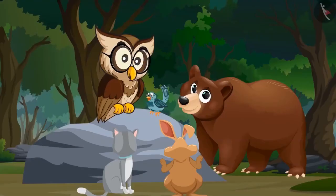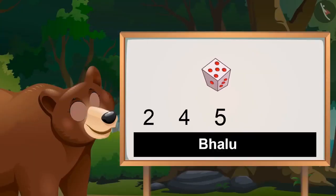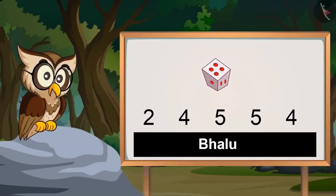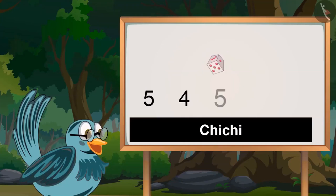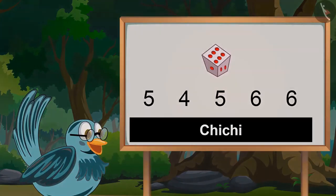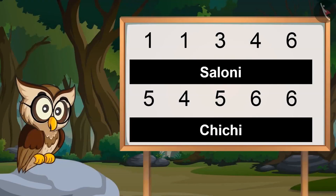Now Bhalo, it's your turn. Two, four, five, five, four. So Bhalo got these numbers on the dice. Now Chichi and Asaloni, turn-wise roll the dice and see what numbers you get. Chichi got: one, one, three, four, six. Asaloni got: five, four, five, six, six. So Chichi and Asaloni got these numbers on the dice.